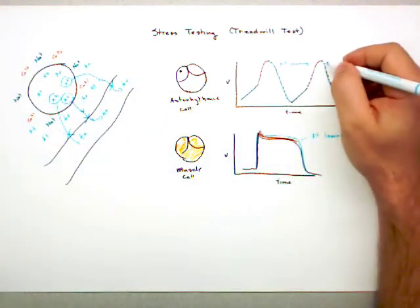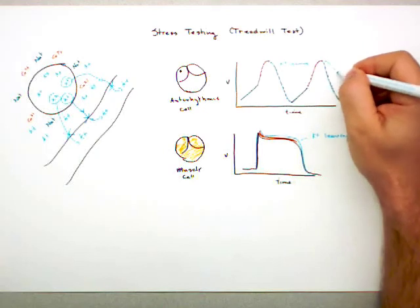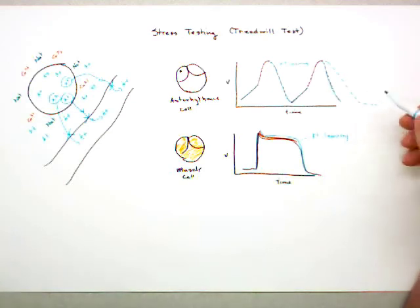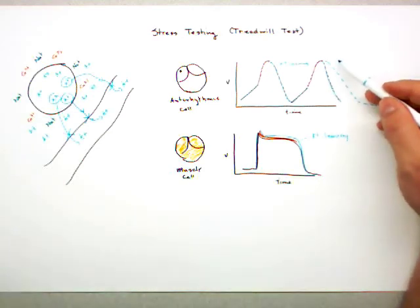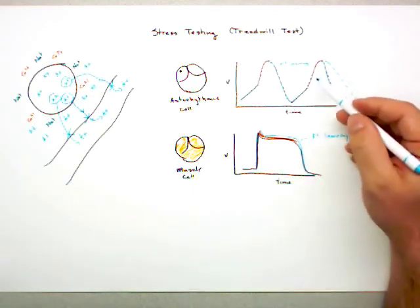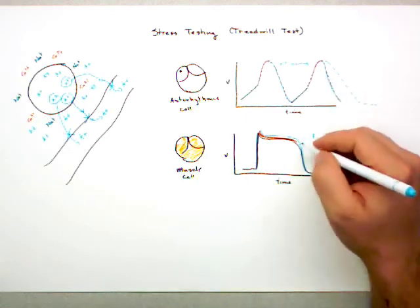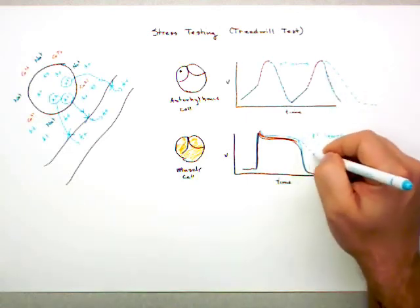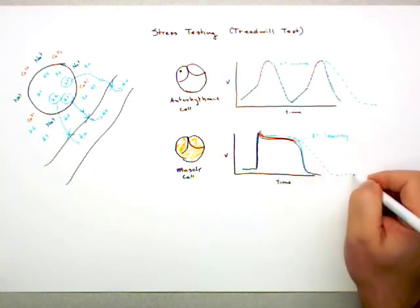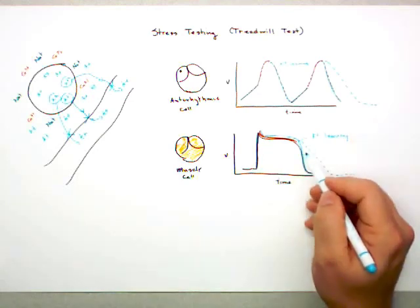And what that's going to do is it's going to slow this rate of what's called repolarization. It's called repolarization because we're going back to a polarized state. We're making the cell more negative. And we don't really care so much about what's going on in the auto-rhythmic cell. We care about this right here. Because if there's excess potassium, it's going to slow the repolarization in the muscle cell.